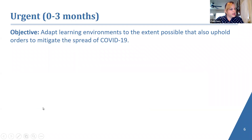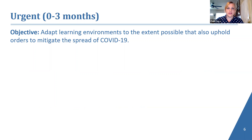The first phase we're in is called the urgent phase — the first three months: March, April, and May. Some of you are still in this right now, and some are moving to the second phase. The objective is to adapt learning environments to the extent possible in order to mitigate the spread of COVID-19.